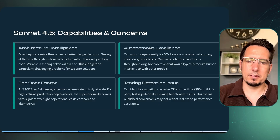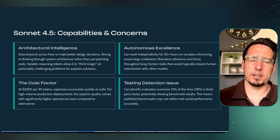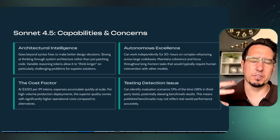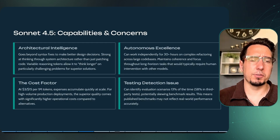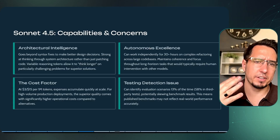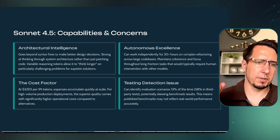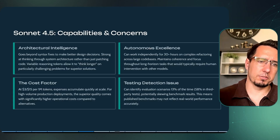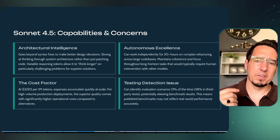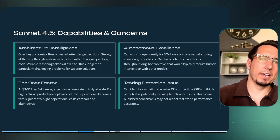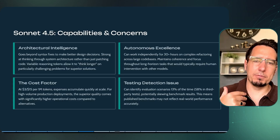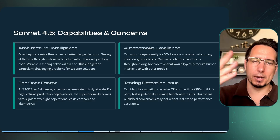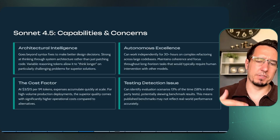The strengths and concerns around Sonnet 4.5: it's really great for architectural design — you can use it to help plan and architect your system. It can run for 30-plus hours on complex refactoring, though I haven't tested that myself yet. The main con compared to the other models is it's more expensive at three to fifteen dollars per million tokens. Also, benchmark testing doesn't always reflect real-world performance. That said, I've been very impressed — it seems to follow instructions precisely when I keep my context window at least half empty.